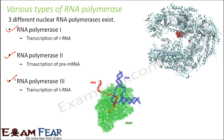RNA polymerase 1 is responsible for transcription of rRNA, that is ribosomal RNA. RNA polymerase 2 helps in transcription of pre-mRNA, from which after capping, tailing, and RNA splicing, the mature mRNA is formed. RNA polymerase 3 helps in the transcription of tRNA, that is transfer RNA. So for all three different types of RNA you have three different types of RNA polymerase enzymes. But in case of prokaryotes, all types of RNA are transcribed by the same single RNA polymerase.